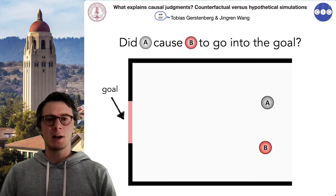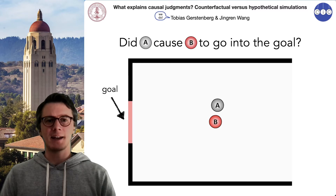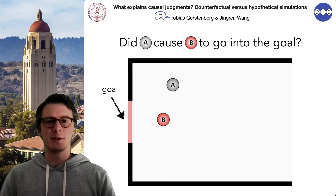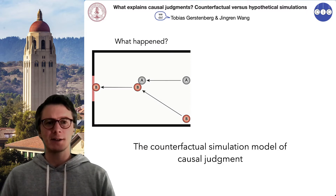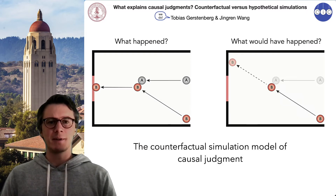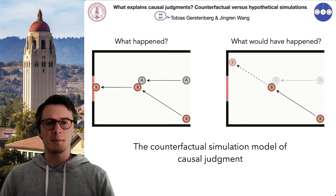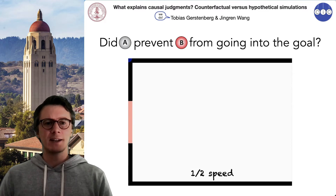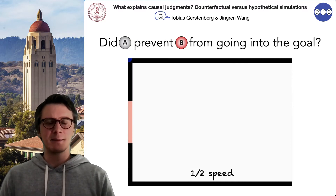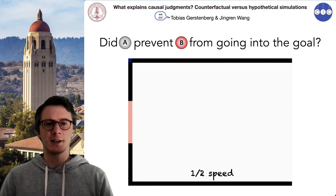In this work, we're interested in how people make causal judgments, such as deciding whether ball A caused ball B to go into the goal in the clip here. According to the counterfactual simulation model, people compare what actually happened with what would have happened in the relevant counterfactual situation — for example, imagining that ball A hadn't been present, and then simulating where ball B would have ended up. There's direct evidence that people engage in this kind of mental simulation in the service of making causal judgments.